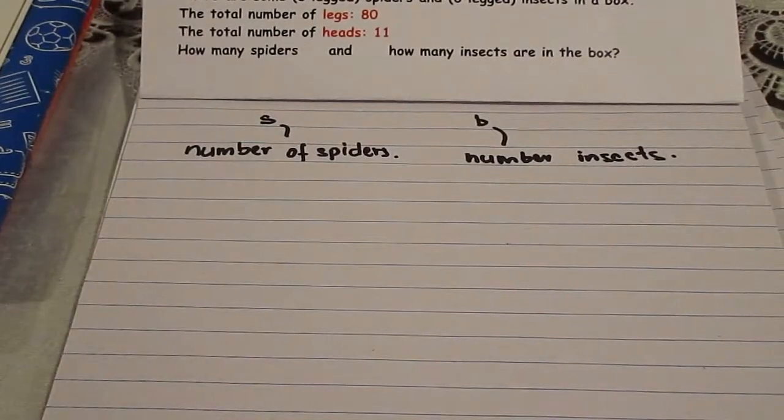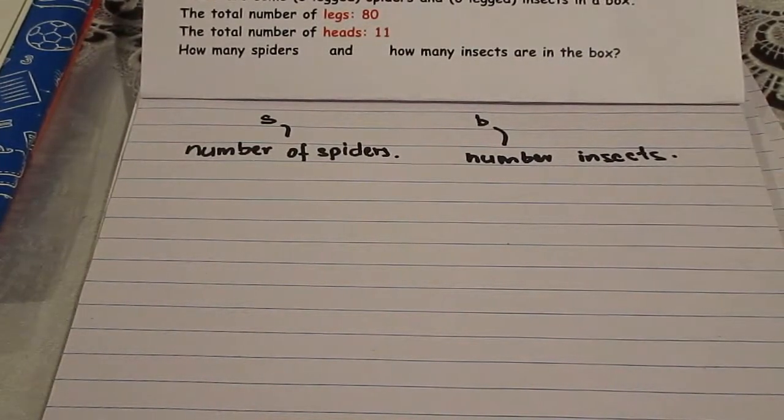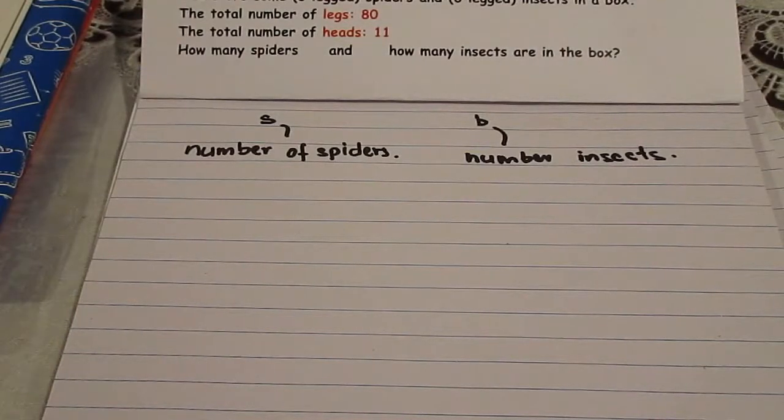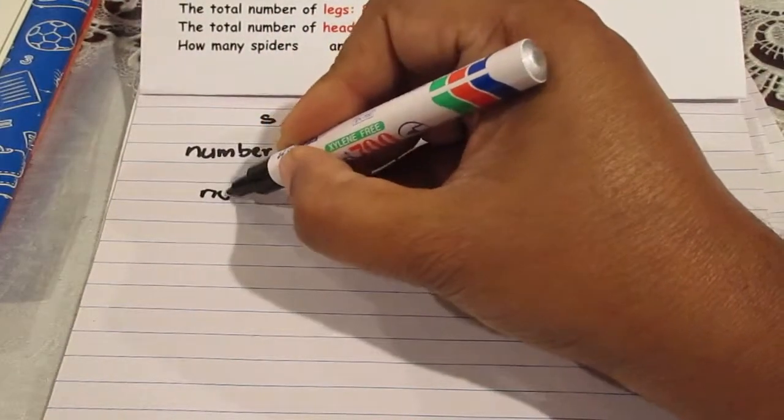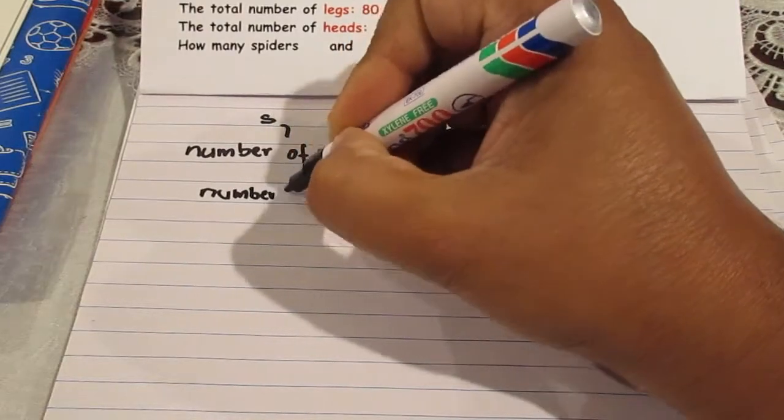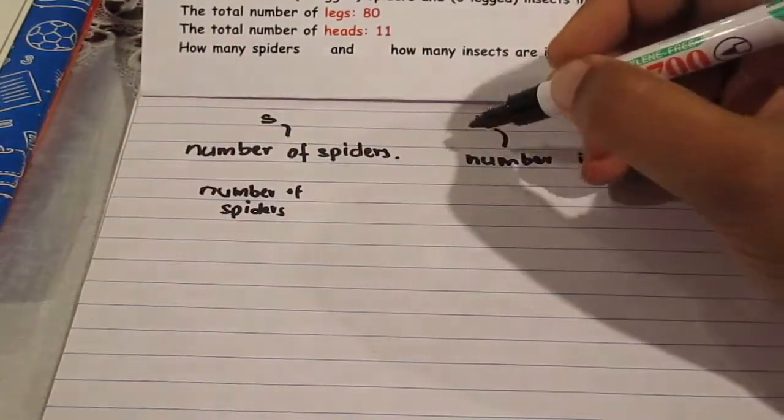Now this is where a lot of people confuse themselves. They think s stands for spiders or s is spiders. I'll state again, s is the number of spiders. So just to stress on it, if you were to draw a column with the number of spiders, a table with the number of spiders on this side and the number of legs...